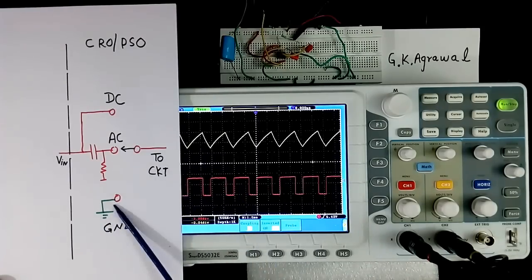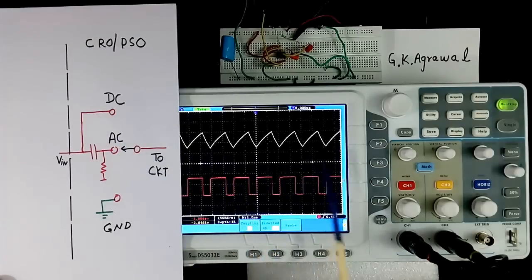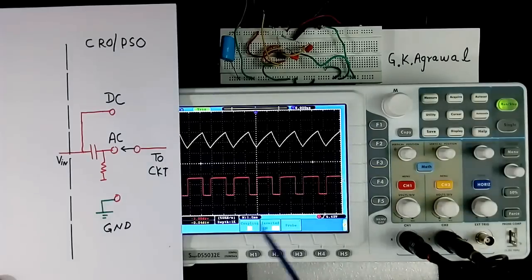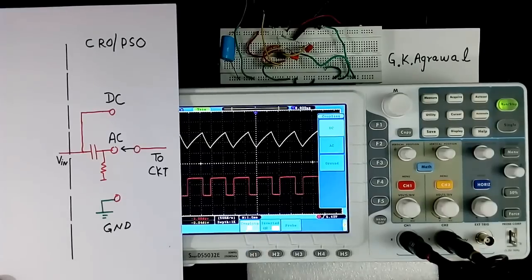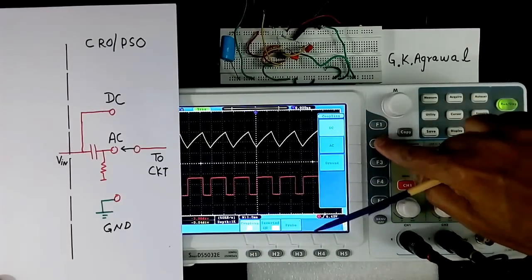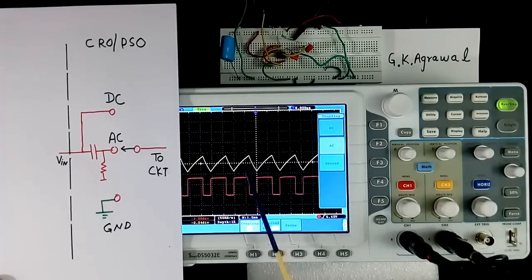Now I will see these 3. In this yellow, channel 2 is yellow. At present, I have selected DC. This is zero line. So it is having DC plus AC both. Now I have selected DC. I will select AC. See. This yellow line has come down. This is zero line. So there is no DC now. Only AC signal you are seeing.